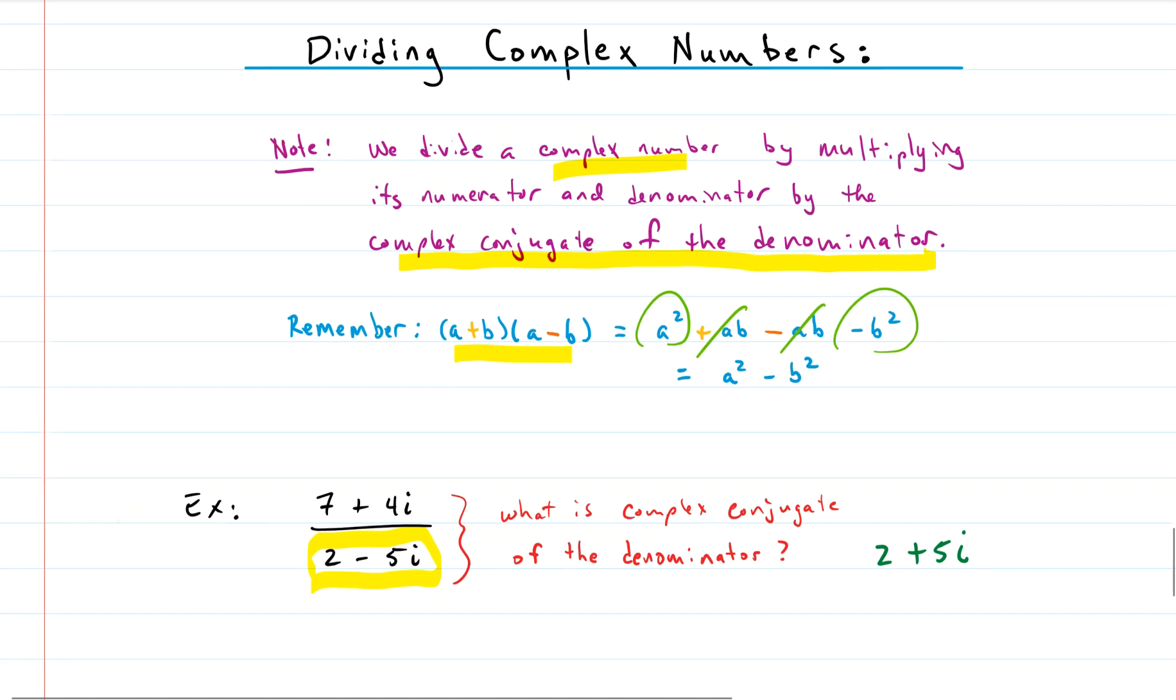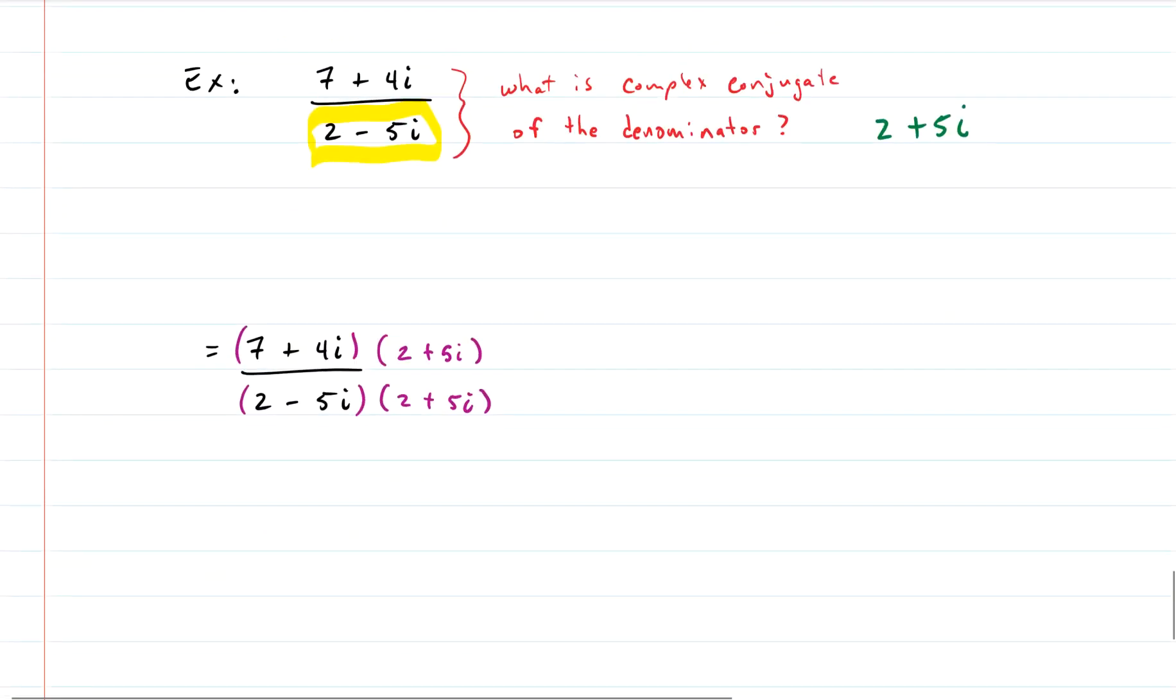So let's do this problem. If we multiply top and bottom by this complex conjugate, then we have 2 plus 5i, 2 plus 5i, top and bottom. And now we just have two multiplication problems. So if we wrote out what these were, the 7 times the 2 gives us 14, the 7 times the 5i gives us 35i, the 4i times the 2 is 8i, and the 4i times the 5i gives us 20i squared.